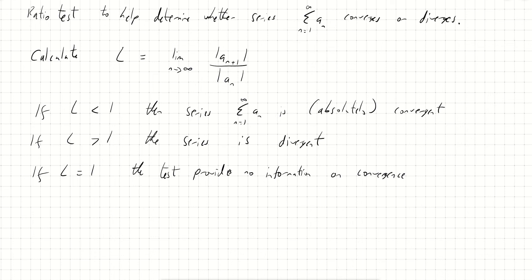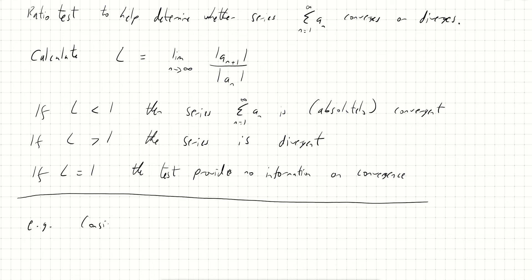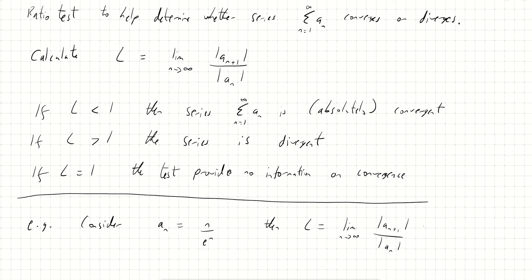Let's try this test on an example. Consider the sequence given by a_n = n over e^n. Then L is the limit as n tends to infinity of |a_{n+1}| over |a_n|. Because n over e^n consists of positive numbers, the modulus signs drop, and this becomes (n+1)/e^{n+1} divided by n/e^n.